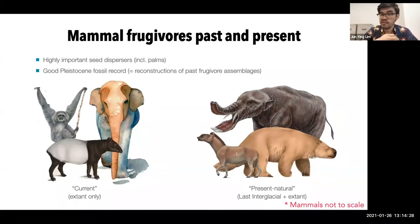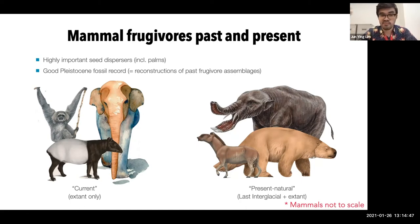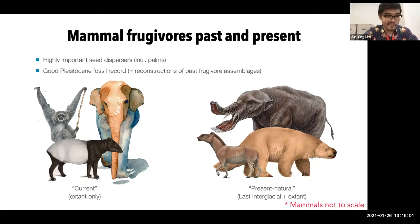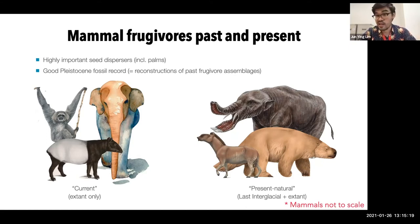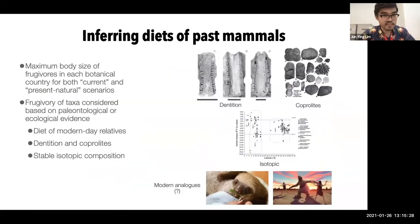To evaluate the impacts of past defaunation, I focused specifically on mammal frugivores for several reasons: they're highly important seed dispersers including of palms, they disperse palm seeds across a wide range of sizes, and they have a very good legacy in the fossil record which allows us to reconstruct what past frugivore assemblages may have looked like. I defined two faunistic scenarios: the current scenario, which only includes extant species and their present-day distributions, and the present-natural scenario, which considers extant species plus mammal species present during the last interglacial — about 130,000 years ago — using paleontological evidence.